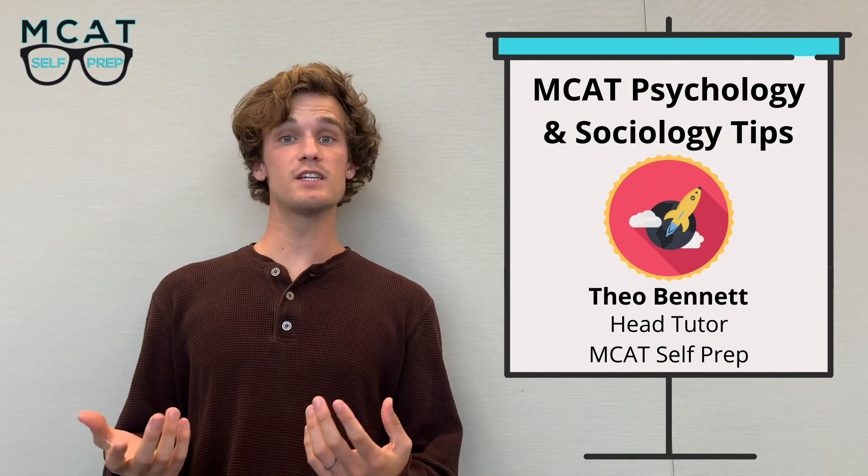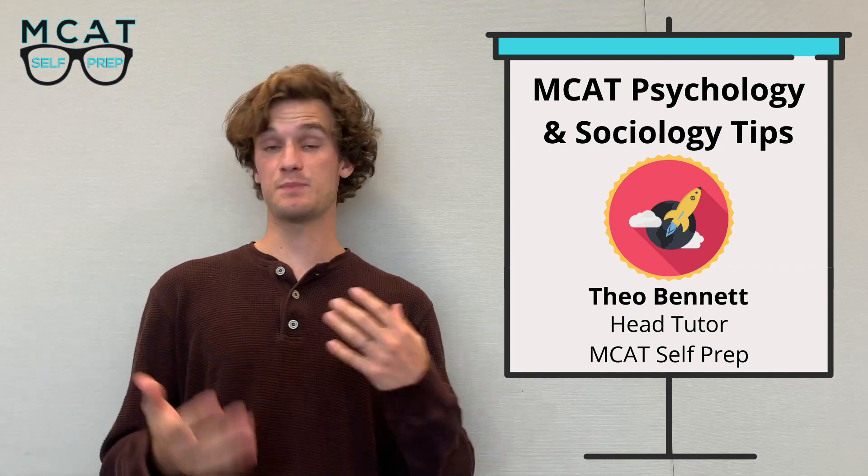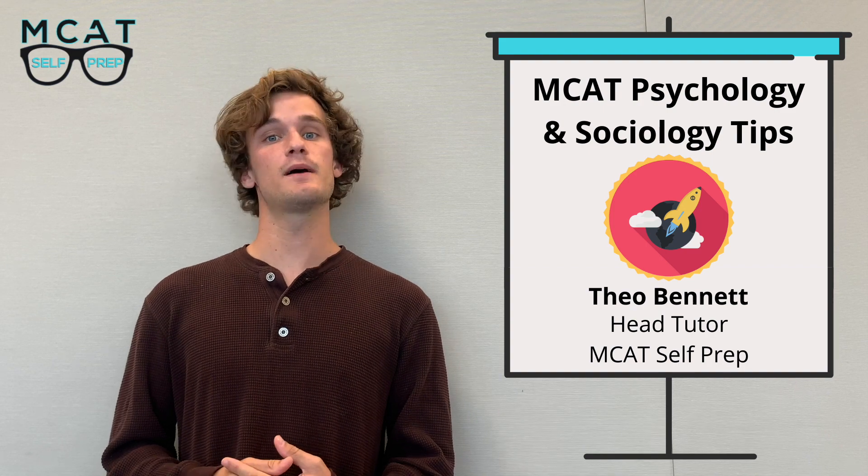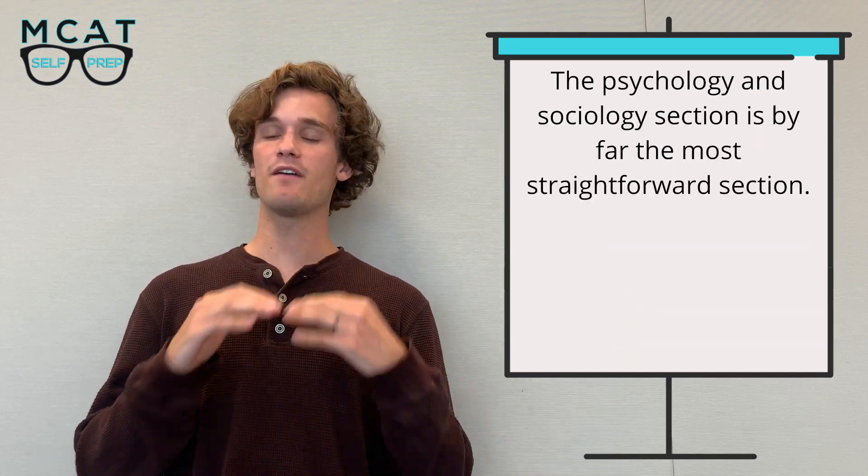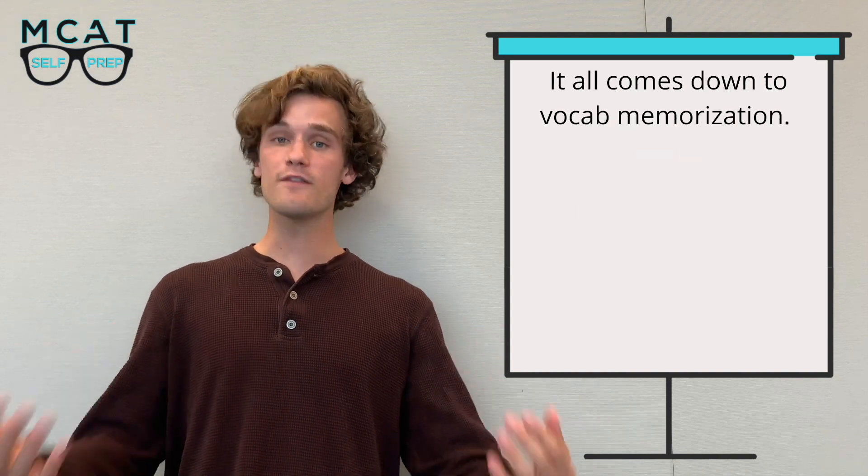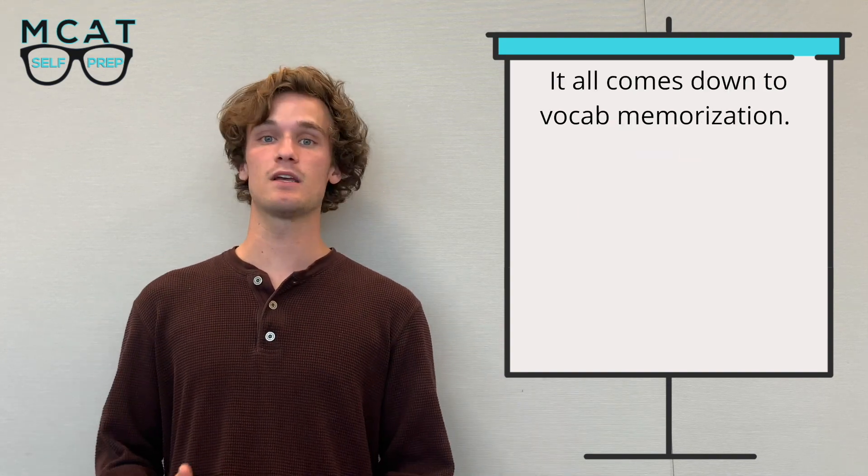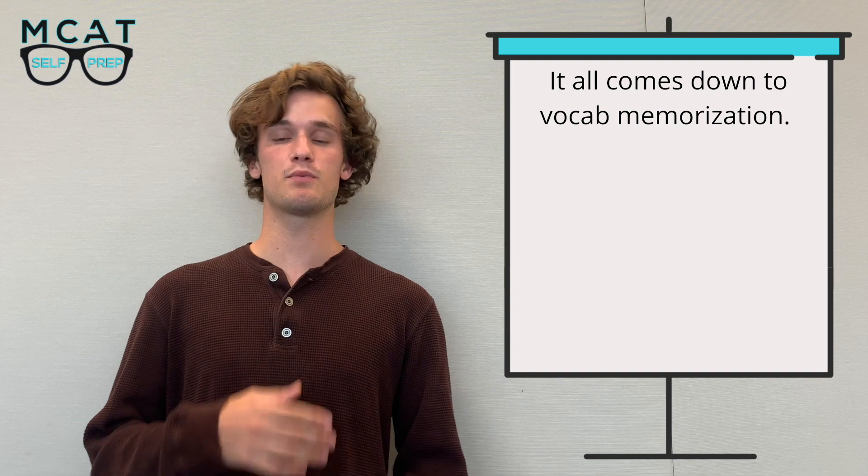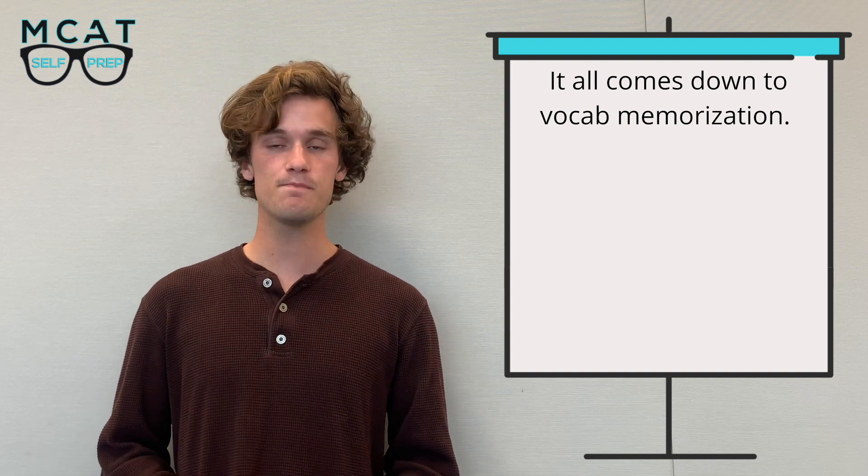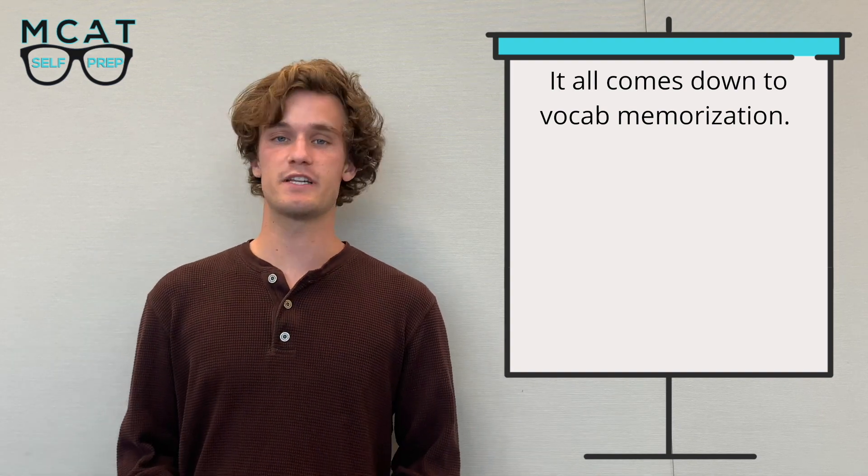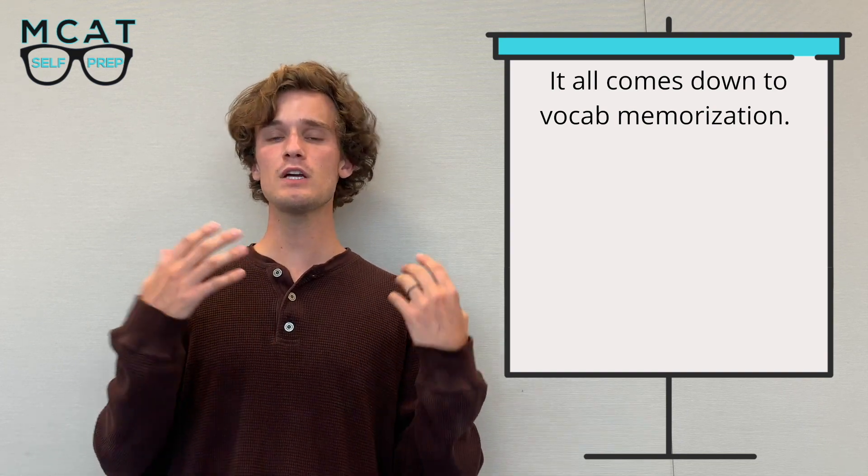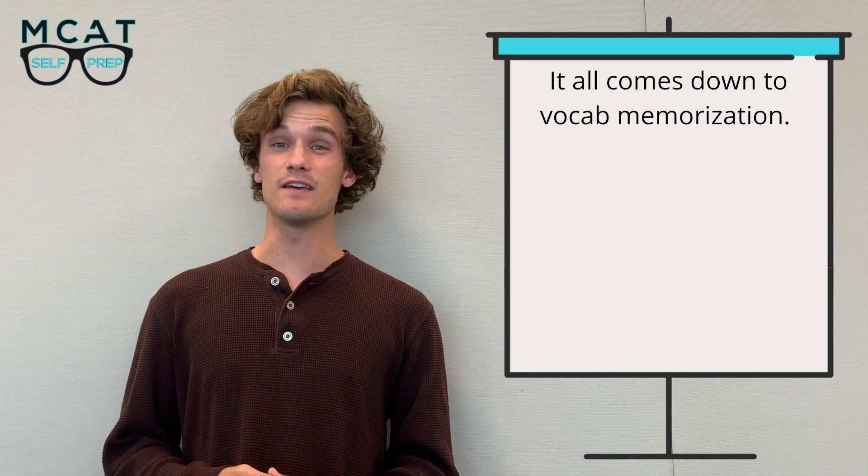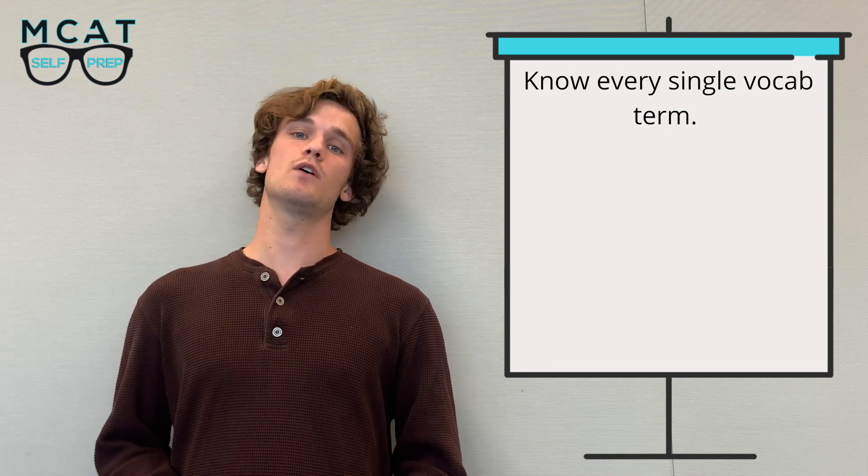The first thing to know is that the psychology and sociology section is by far the most straightforward section. It largely comes down to memorizing a ton of vocabulary terms for both psychology and sociology, then recognizing these definitions when they appear on the exam. The best advice I can give you is to know every single vocab term.